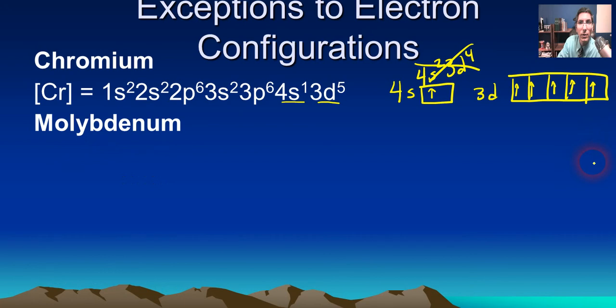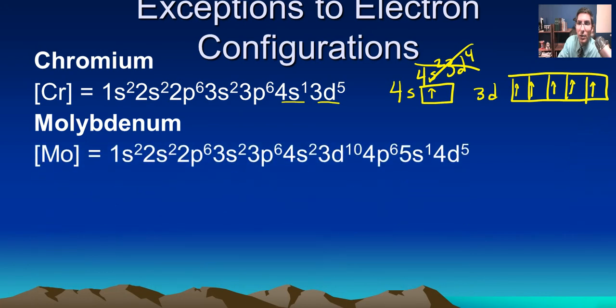Now here's another one. An element right underneath it on the periodic table essentially does the same thing. So molybdenum, looking at where it is on the table, you would expect it to be 5s2 4d4, but it doesn't do that. That's not right. It promotes that last s electron, so it's 5s1 4d5.